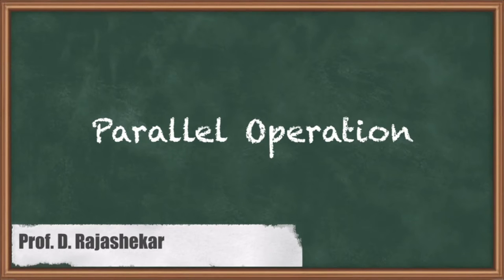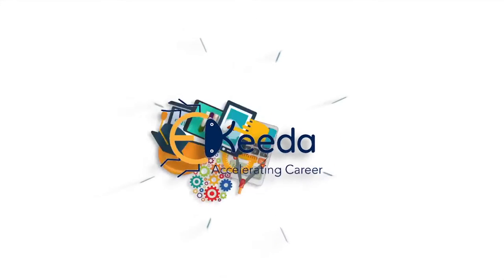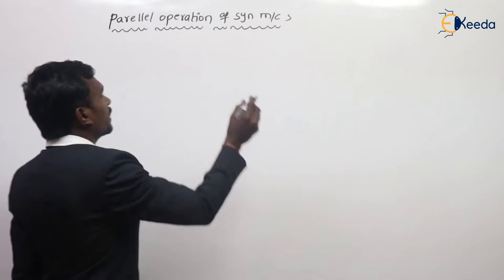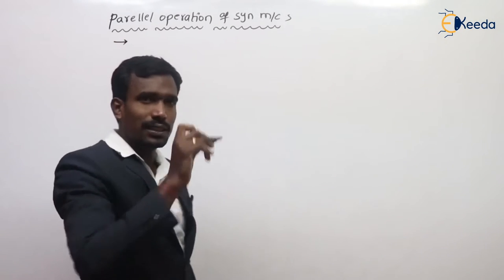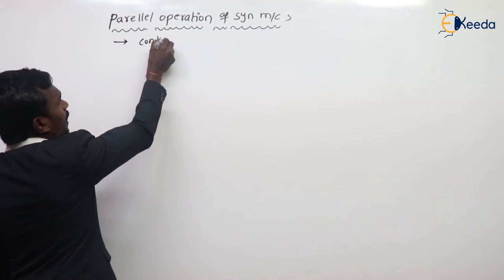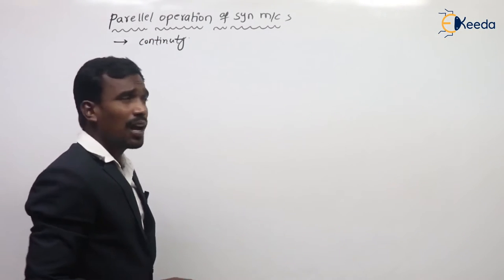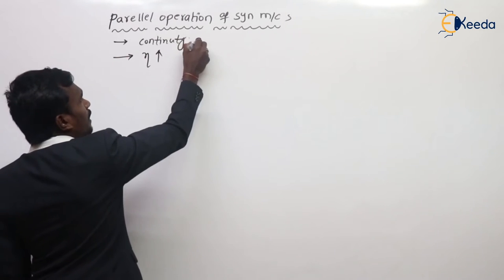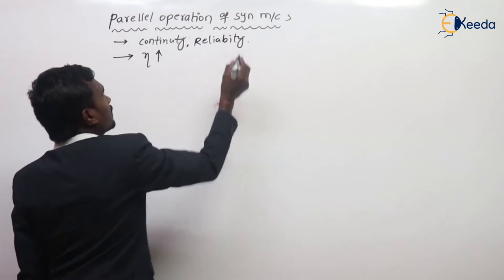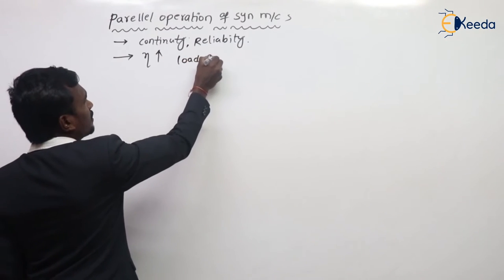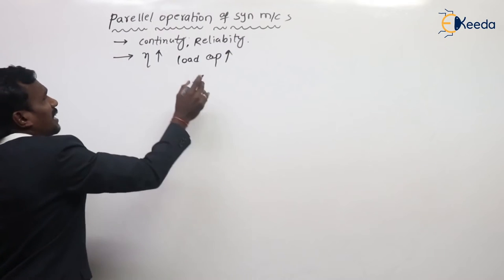In this video we are going to discuss parallel operation of synchronous machines. Generally, why do we prefer parallel operation? The advantages of parallel operation are: continuity, efficiency increases, reliability, and load capacity increases. There are many such advantages due to parallel operation of synchronous machines.